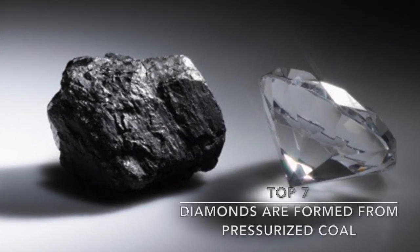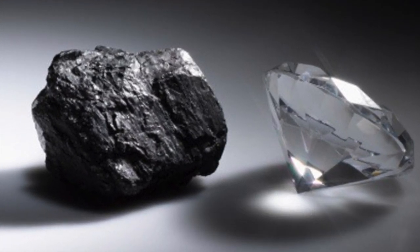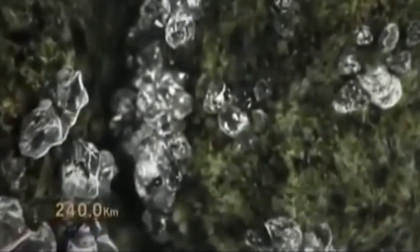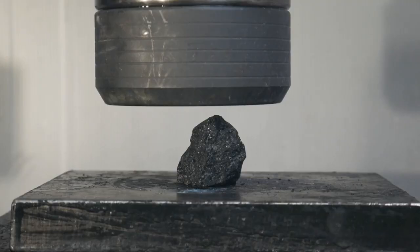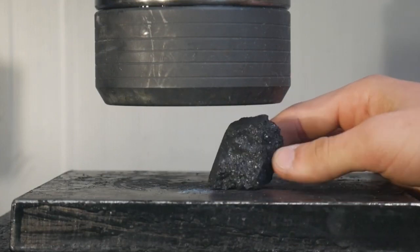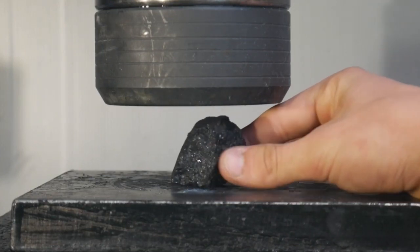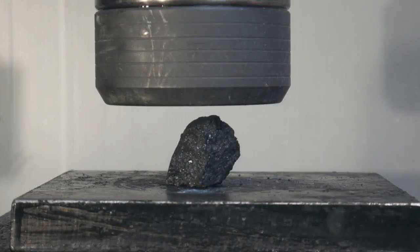Top 7. The Diamonds Form From Pressurized Coal. Diamonds are made out of carbon under a massive amount of pressure, and coals are made of carbon as well. So it is therefore sensible to think that diamonds can be formed from pressurized coal, except.